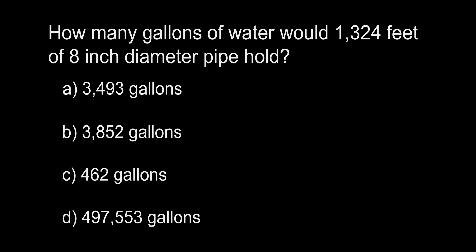How many gallons of water would 1,324 feet of 8-inch diameter pipe hold? A. 3,493. B. 3,852. C. 462. D. 497,553 gallons.